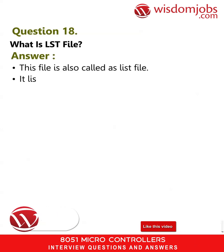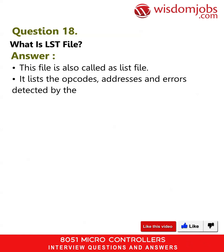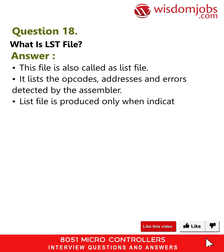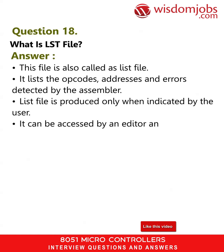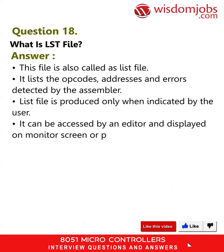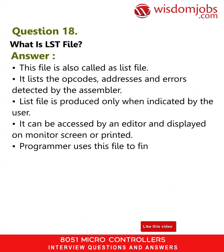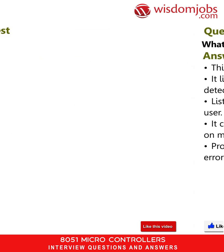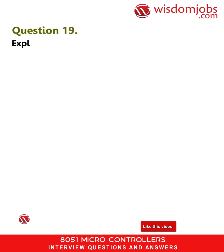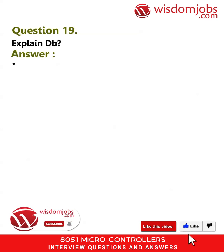The list file lists the opcodes, addresses, and errors detected by the assembler. The list file is produced only when indicated by the user. It can be accessed by an editor and displayed on a monitor screen or printed. The programmer uses this file to find syntax errors and later fix them.